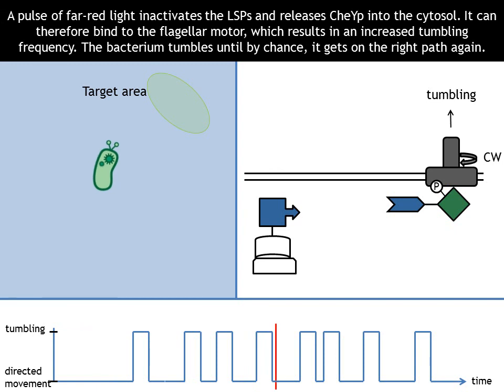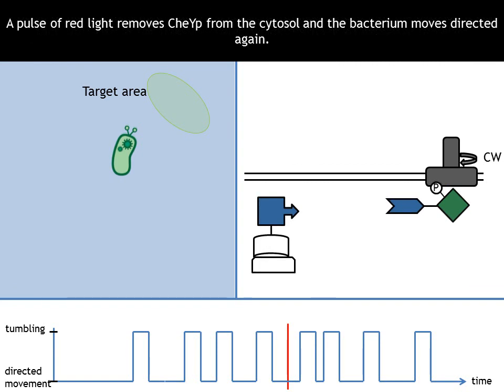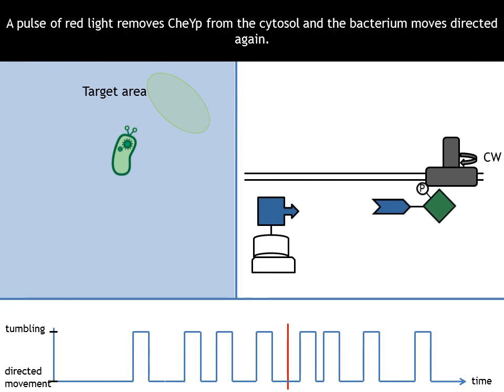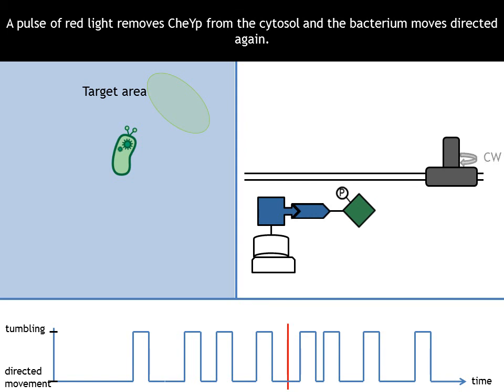The bacterium tumbles until by chance it gets on the right path again. A pulse of red light removes CheYP from the cytosol and the bacterium moves directed again.